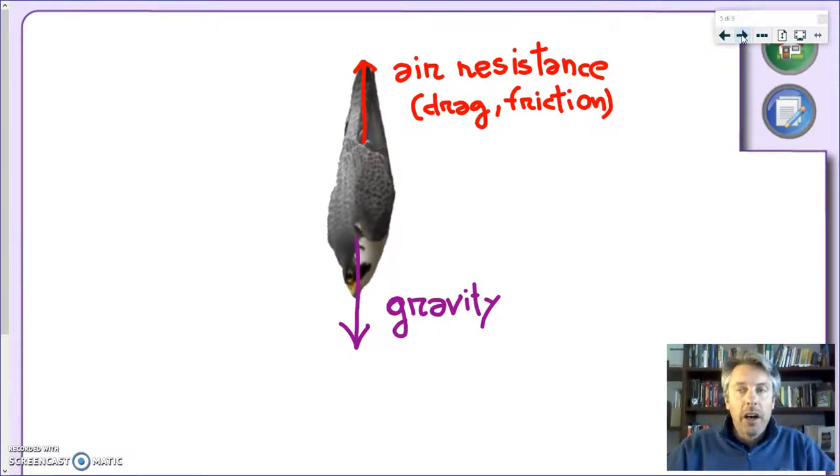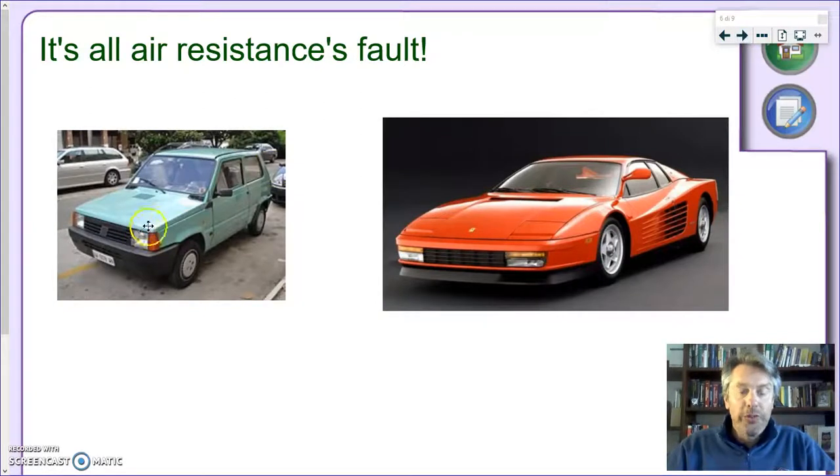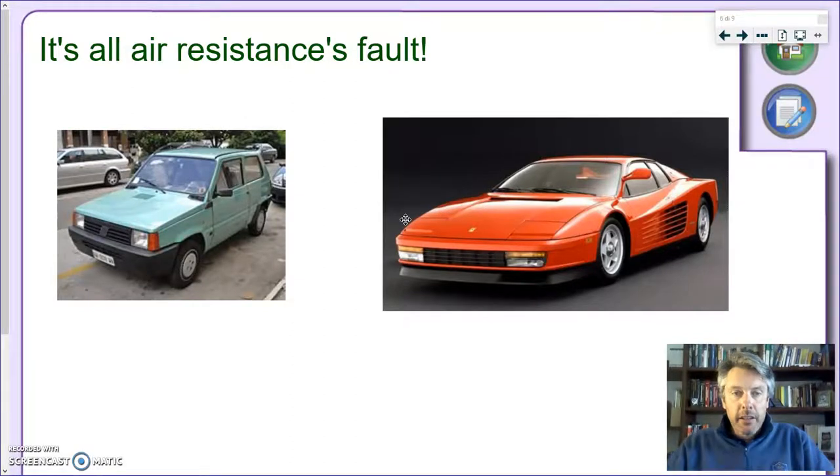Which, in some sense, explains why my old Fiat Panda will never be as fast as a Ferrari. It's the shape. It's all a matter of the shape. This shape has too much air resistance. Otherwise, I would be able to beat a Ferrari, right?